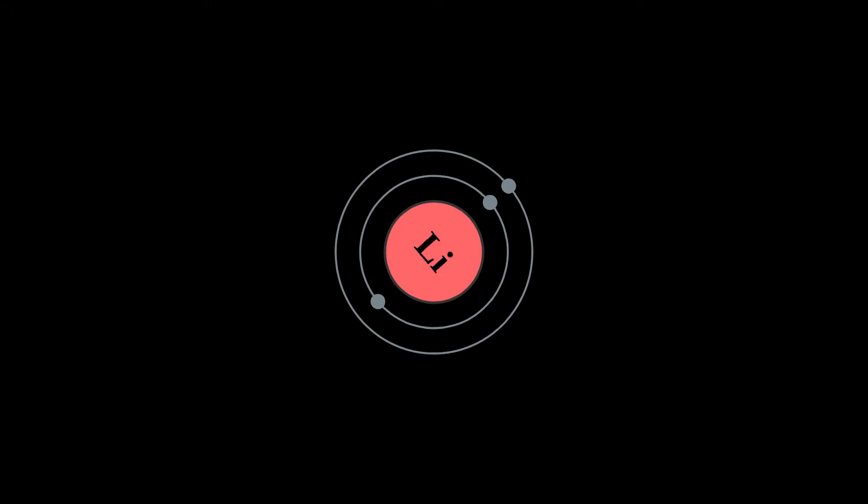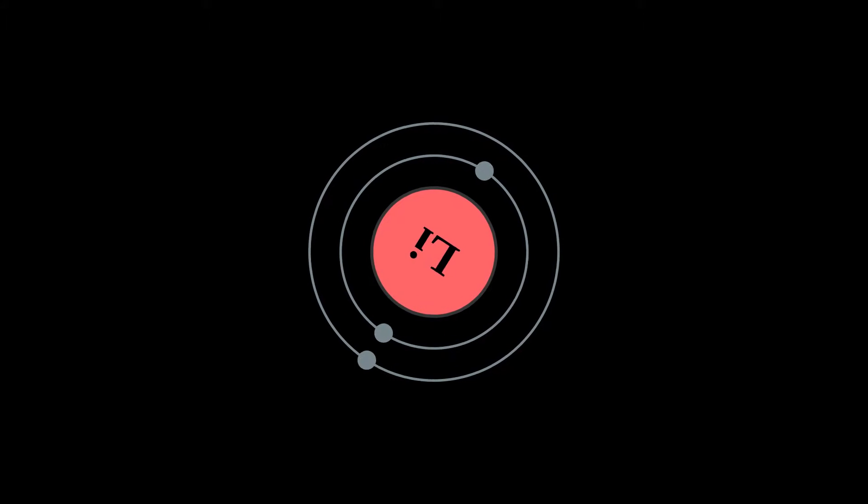Lithium is a chemical element with the symbol Li and atomic number 3. It is a soft, silver-white metal belonging to the alkali metal group of chemical elements.